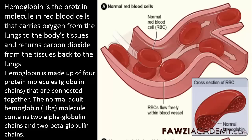Hi, this is Forzy Academy. We'll talk about hemoglobin. Hemoglobin is the protein molecule in red blood cells that carries oxygen from the lungs to the body's tissues and returns carbon dioxide from the tissues back to the lungs.